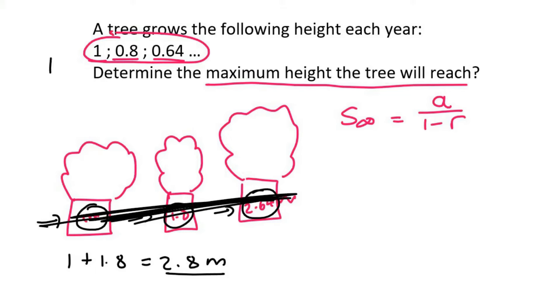What you want to do is you want to take how much the tree grows by every single year, and you want to add those numbers together. Because if you add the amount of growth, that will give you the total height of the tree.